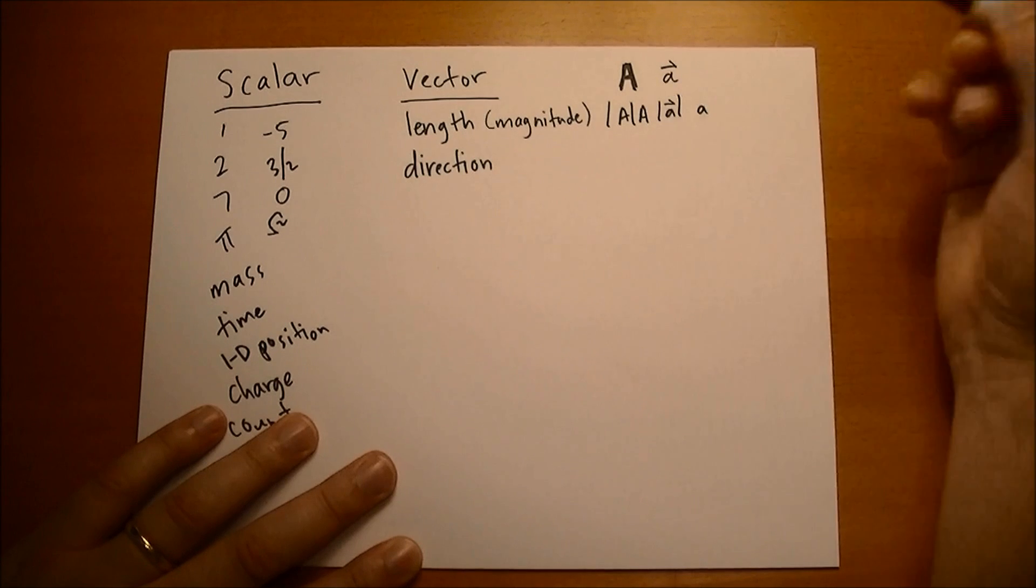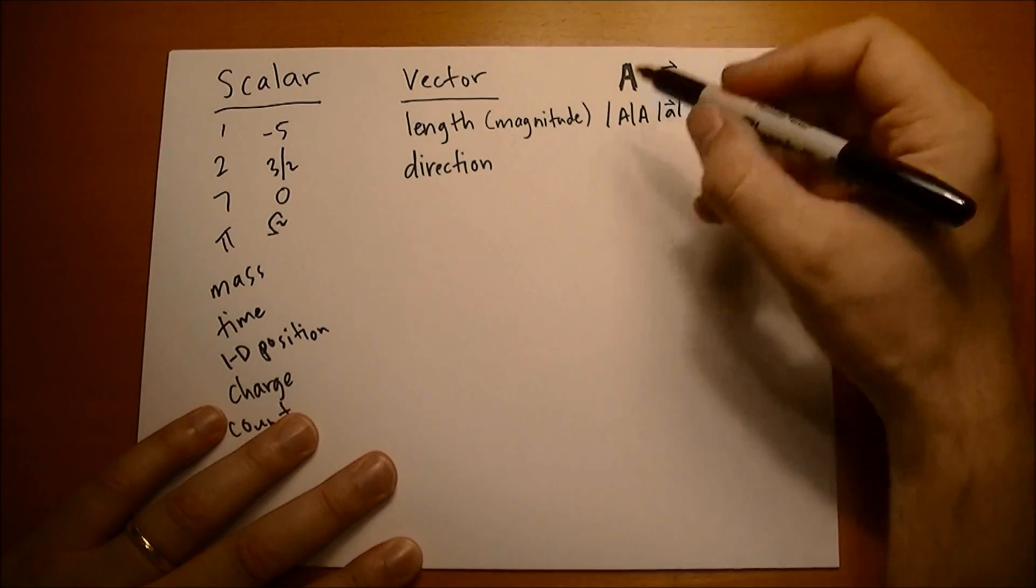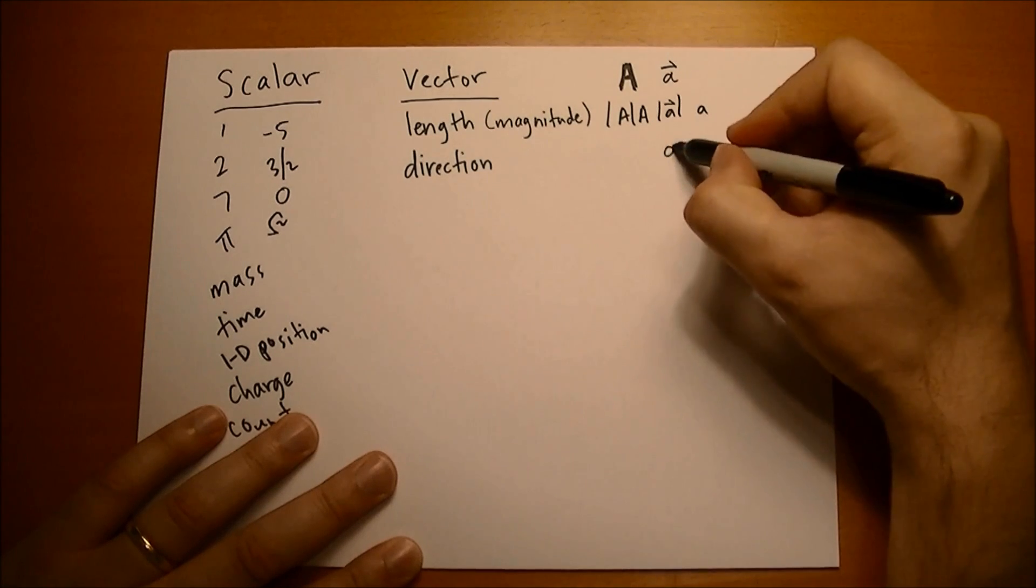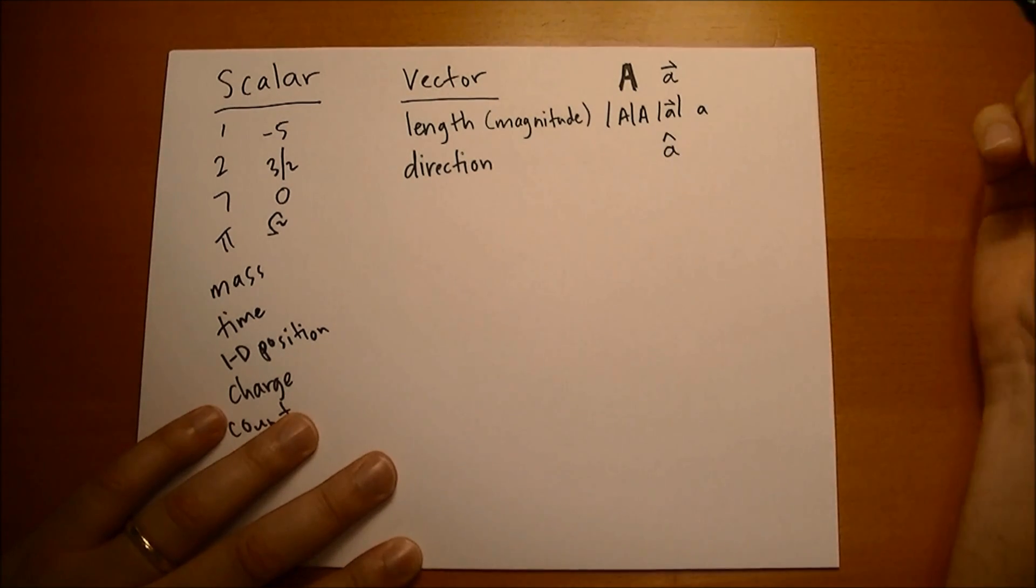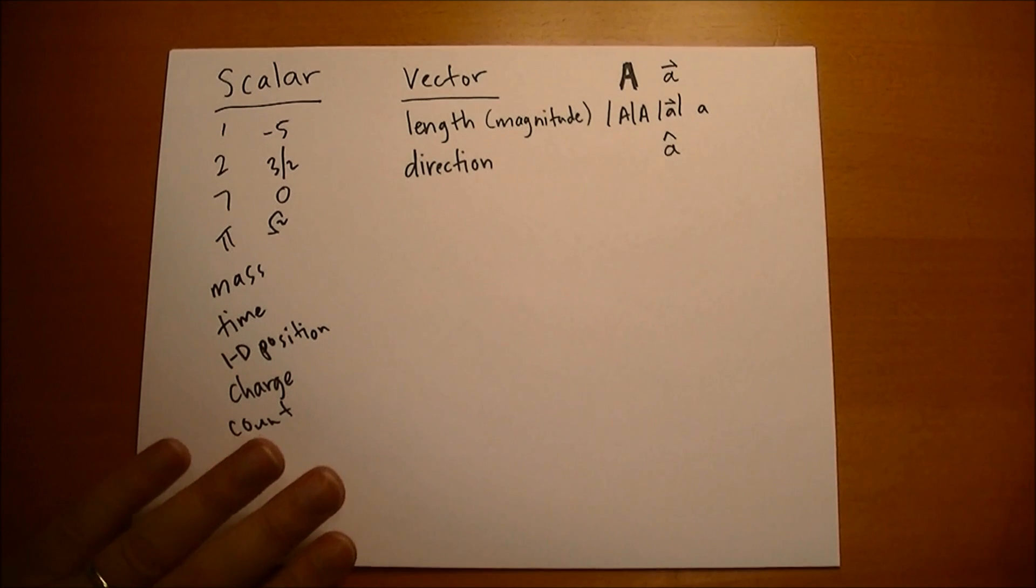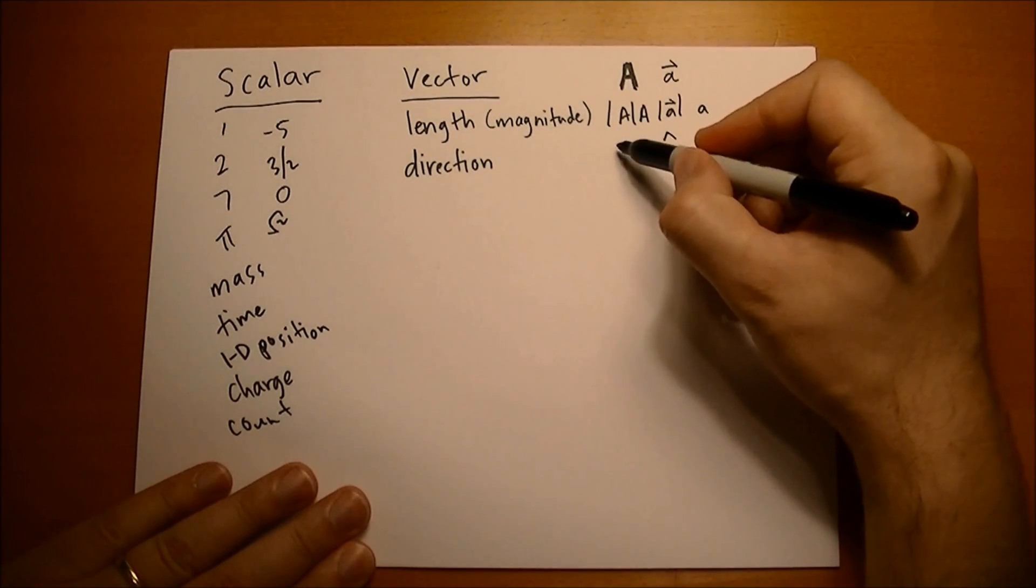That's the length. The direction is, well I'll write it this way, A hat. That's basically a unit vector, a vector of unit length, meaning its length is one, pointing in the same direction as the A vector. For this one you'd probably see it as A hat in the book.